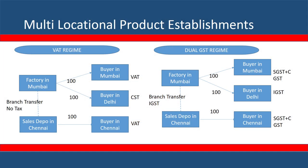For multi-locational product establishments with branches or warehouses across multiple states, multiple VAT registrations already exist — these get migrated to GST. Inter-branch movements that were previously handled with F-forms (with no tax) are now substituted by IGST, since interstate branch transfers are now liable for taxation. This brings up the valuation aspect of inter-state branch transfers.